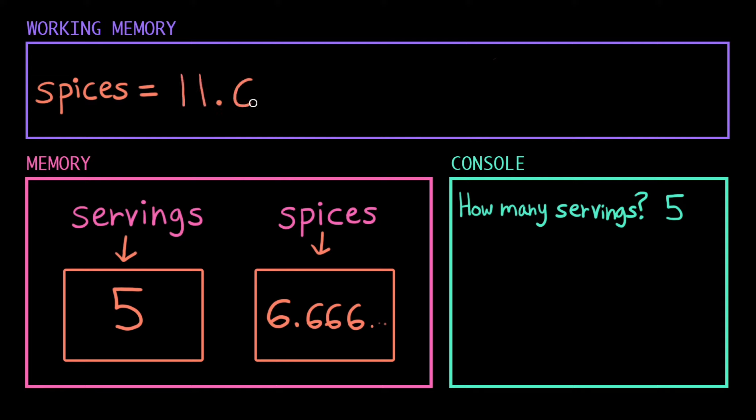We have a single value now on the right-hand side of the equal sign, so we can go ahead and do that assignment. It checks in its memory and sees, oh, I already know a spices, so I'm just going to erase what's in there and replace it with this new value. Cool. Clear out working memory and move on.